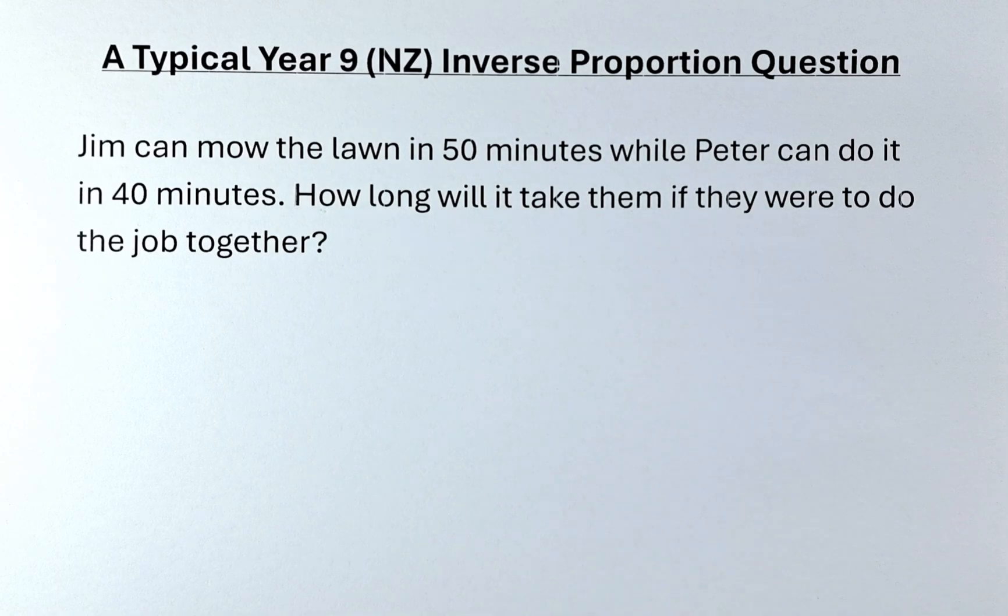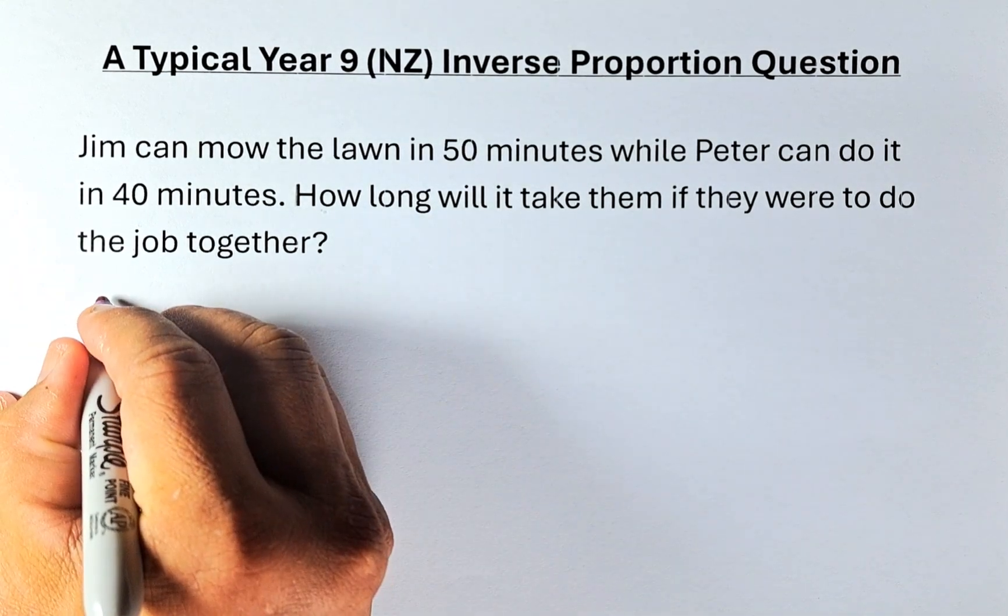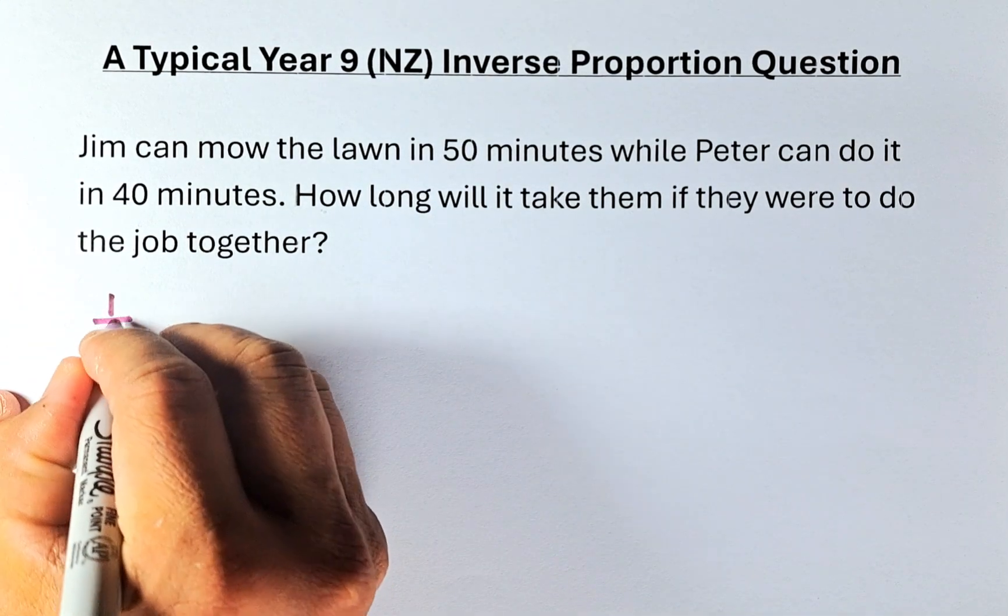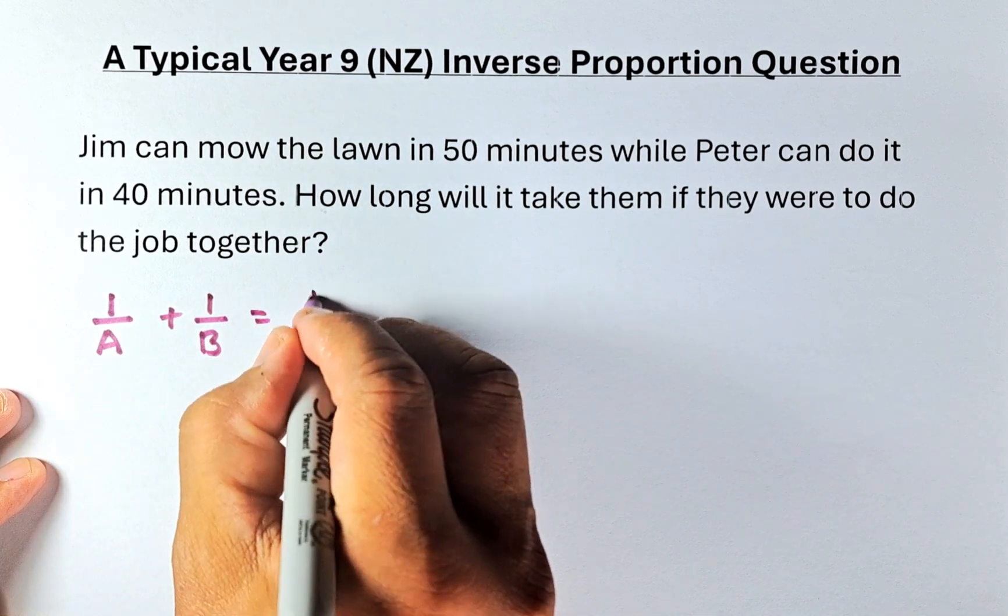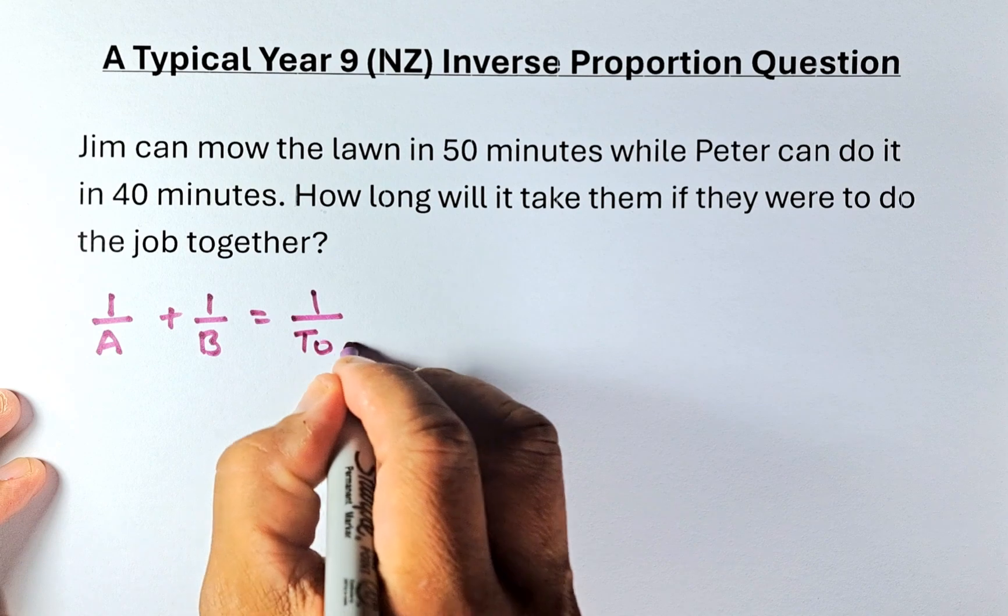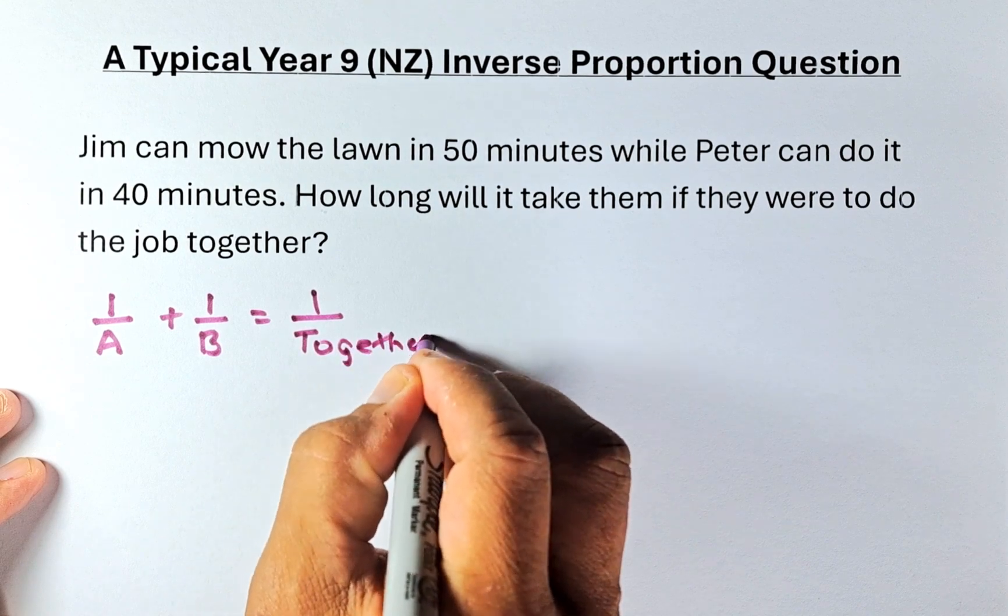So the formula to do this is, there are two ways to do this. The long way is using the formula. The formula is that 1 over person A plus 1 over person B is equal to 1 over together. So this is the formula.